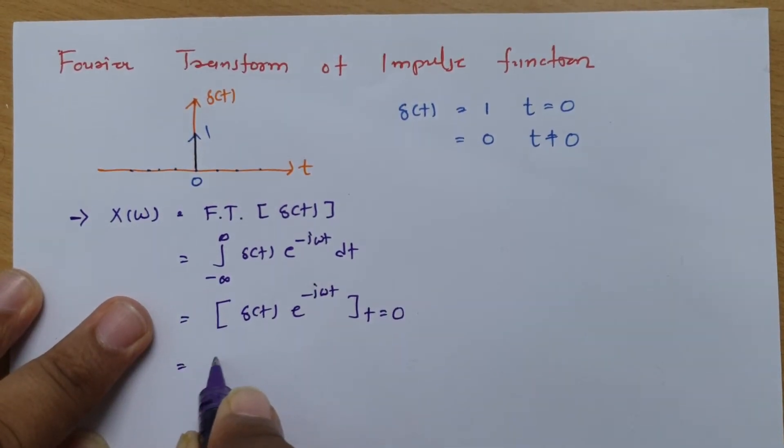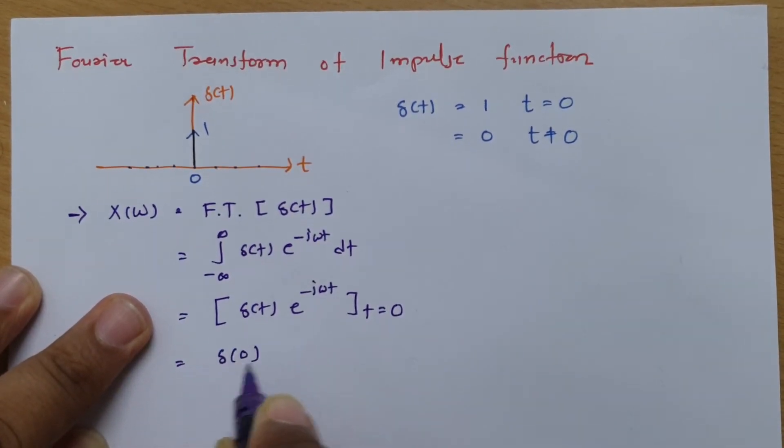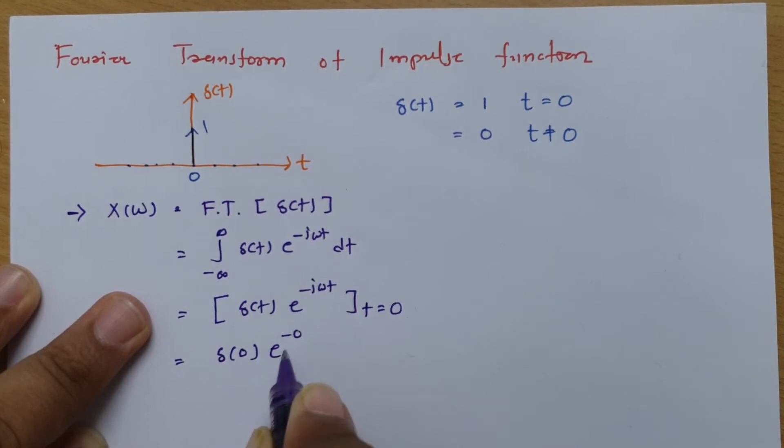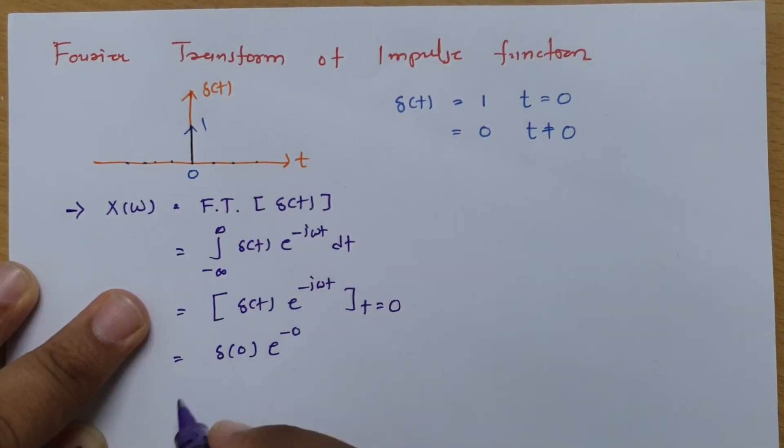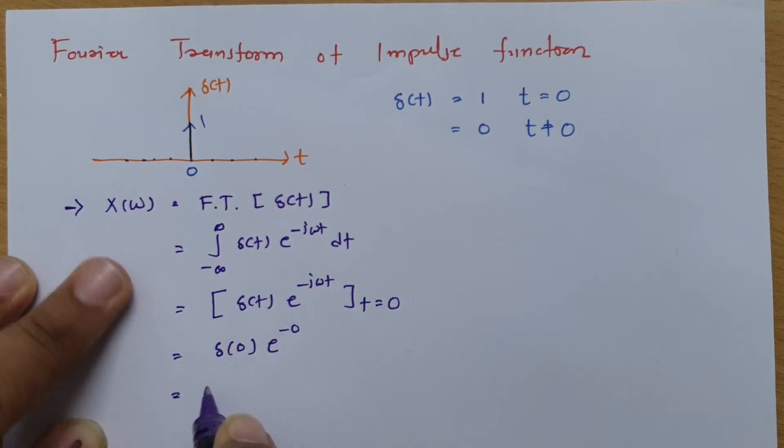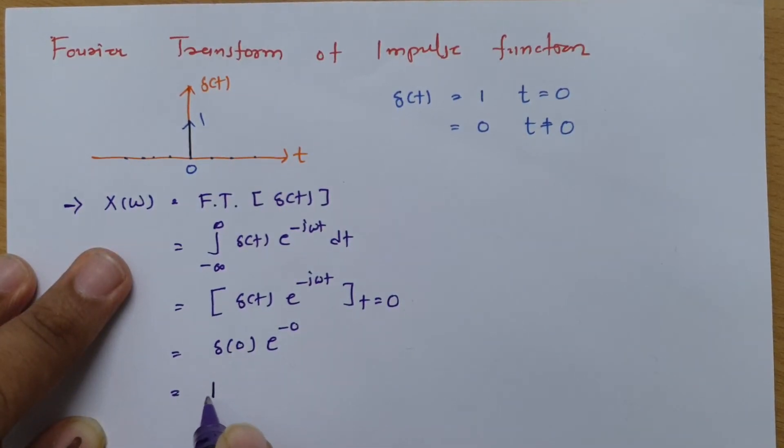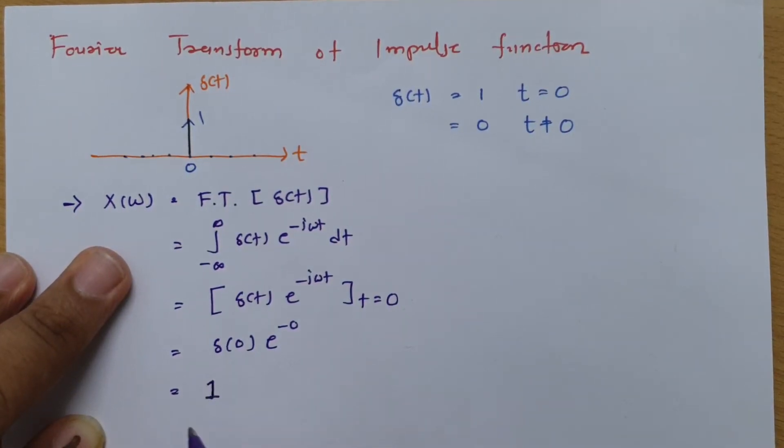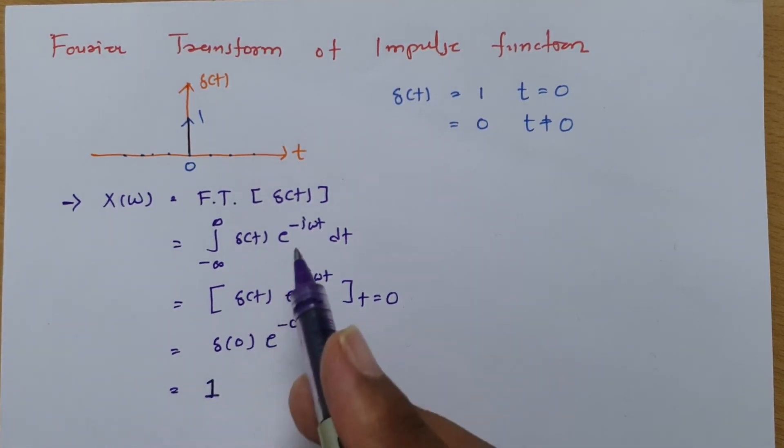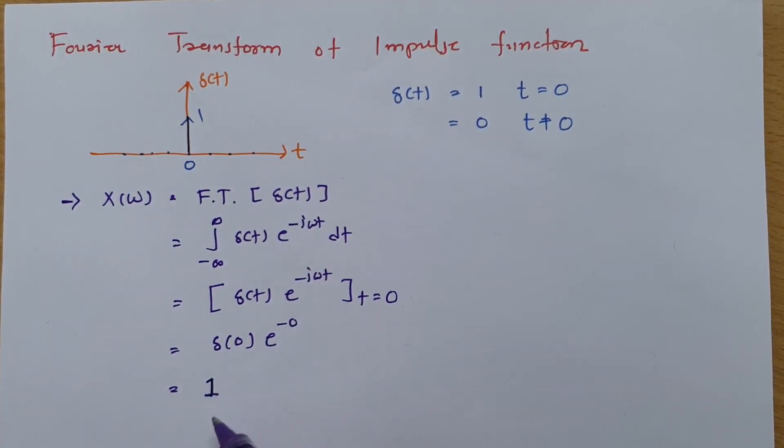So we will be finding this is del of 0 into e to the power minus 0. So this is 1 and del of 0 is even unity. So Fourier transform of impulse function that is 1, that is how we can identify it.